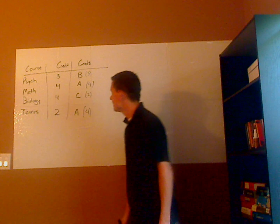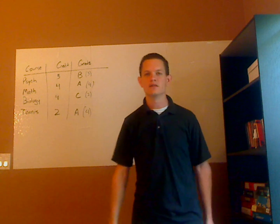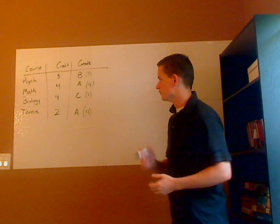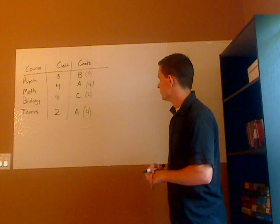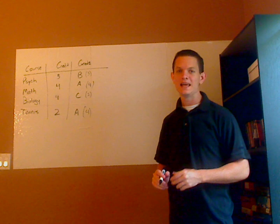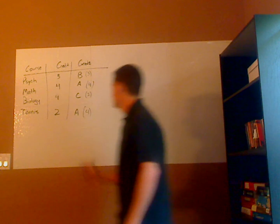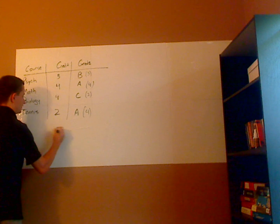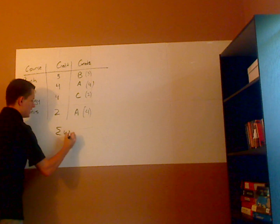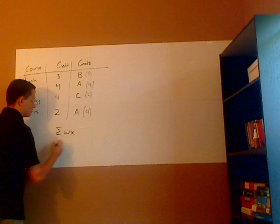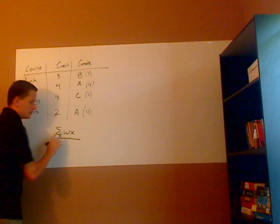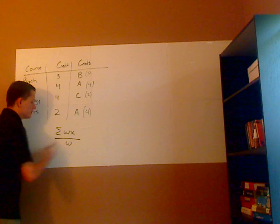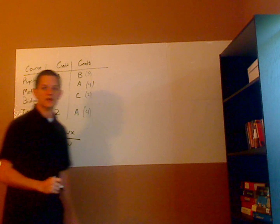So assign each letter a point — and that's what the points are. Now to calculate a weighted mean, the formula is a summation of the weights times the values, and you just add each one, divided by the total weight.